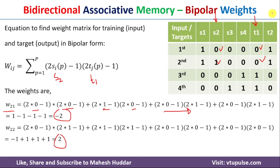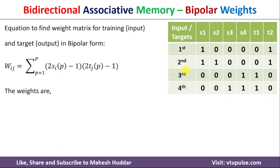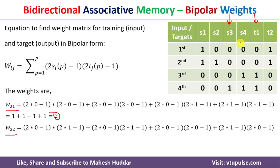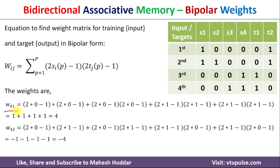Next, we calculate W31, using the S3 column and T1 column, which gives plus 2. Then W32, using S3 and T2, gives minus 2. For W41, where I equals 4 meaning S4 and J equals 1 meaning T1, putting in all values gives plus 4. Finally, W42, using S4 and T2, gives minus 4.